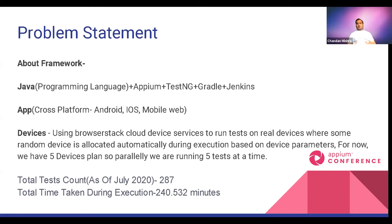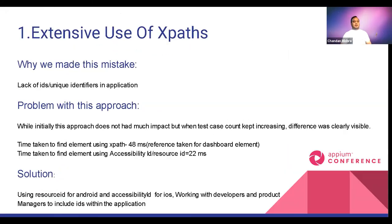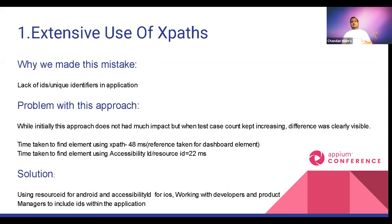I will now talk about the activities we did one by one, noting which ones made the maximum impact and which were good to have. As an automation engineer beginner mistake, we made heavy use of XPath. Sometimes this is because IDs are not known to be faster, and in our case many accessibility IDs and resource IDs were not present in the application, so we had to use XPath initially.